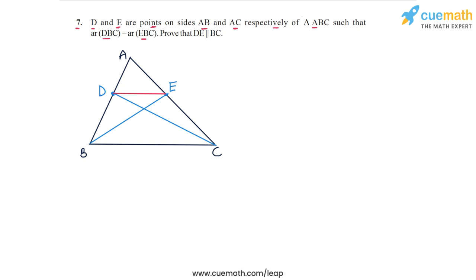Here's a figure I've drawn for this problem. ABC is a triangle, D and E are points on AB and AC. Let's highlight triangle DBC, the area of this triangle is equal to the area of triangle EBC.